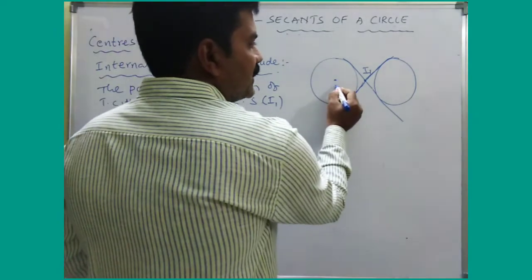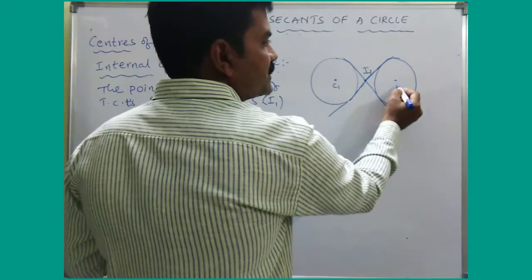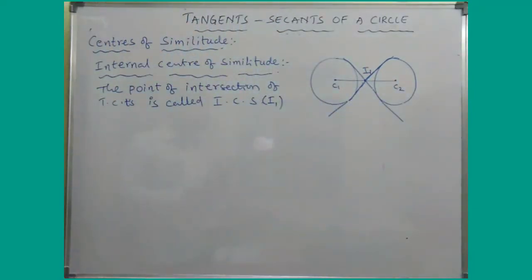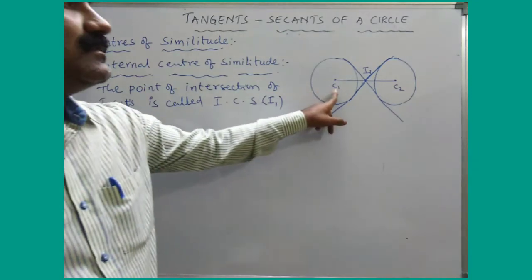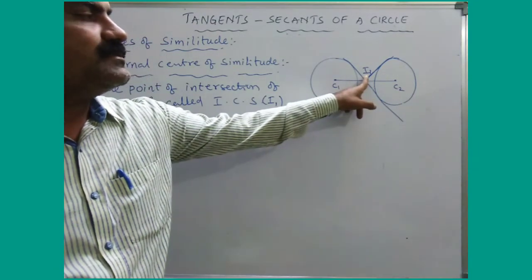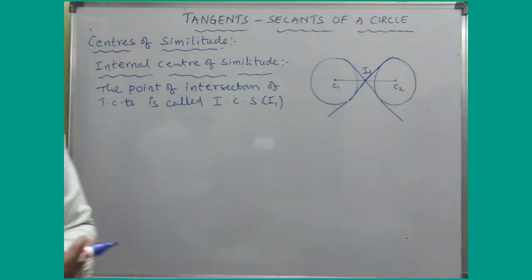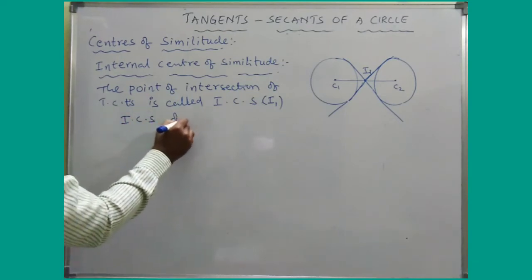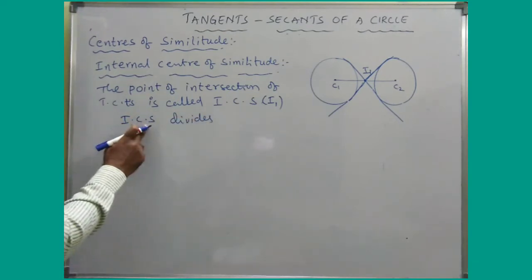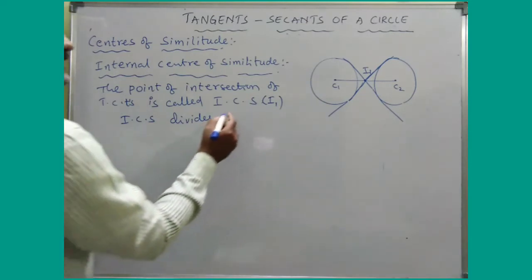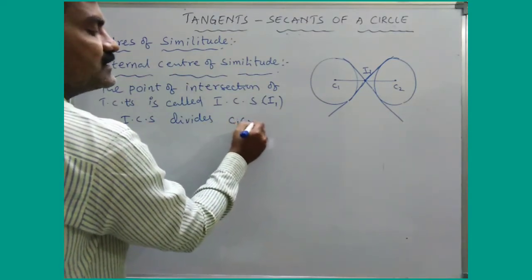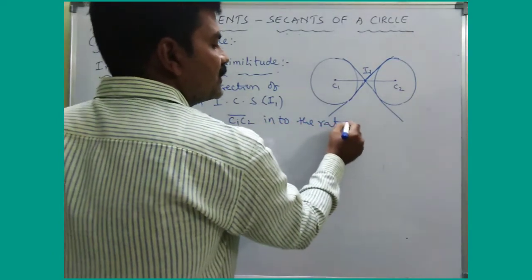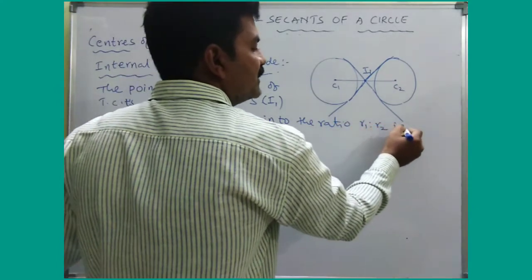I1 is the point of intersection of transversal common tangents. The line joining C1 and C2 passes through this internal center of similitude — that is, C1, C2, and I1 are collinear. Also note that ICS divides the line joining C1 and C2 in the ratio R1 : R2 internally.